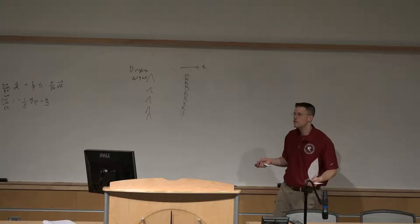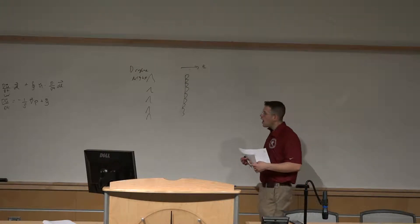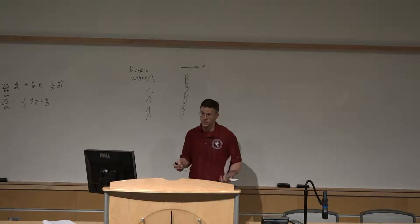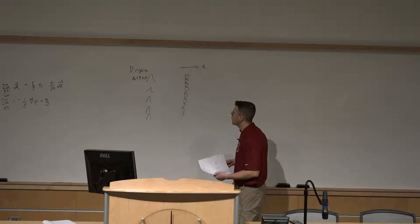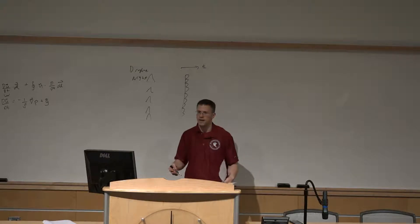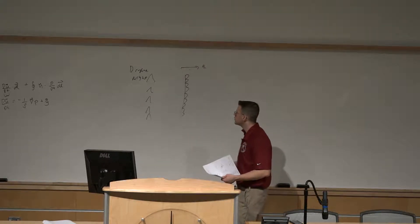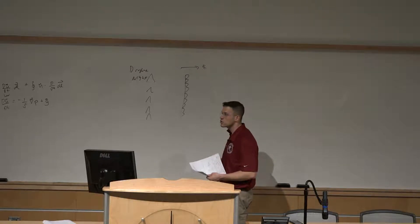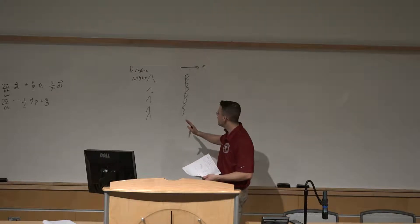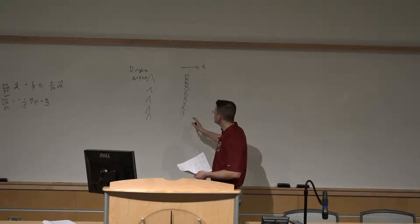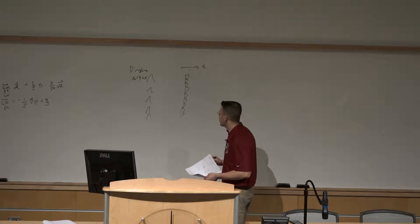We're going to talk about the applications of baroclinic fluids and our understanding of how they operate to discuss what goes on with a dry line and the vertical circulation associated with a dry line. We'll start by talking about what's happening at night. At nighttime, we have dry air to the west of the dry line and relatively more moist air to the east of the dry line.